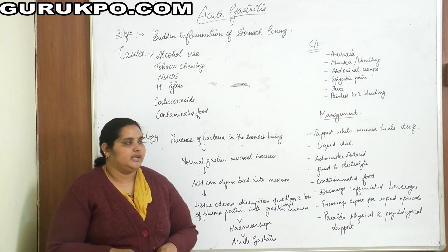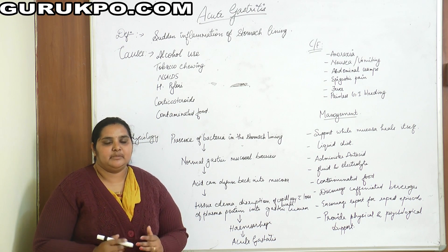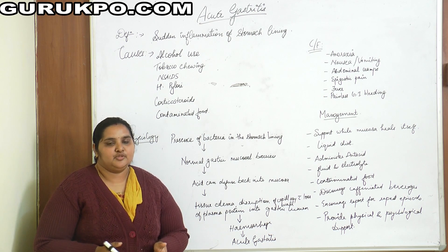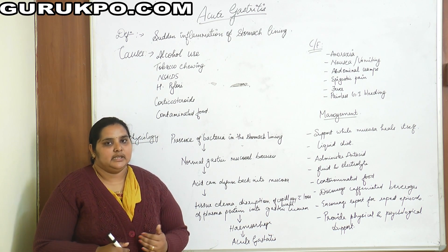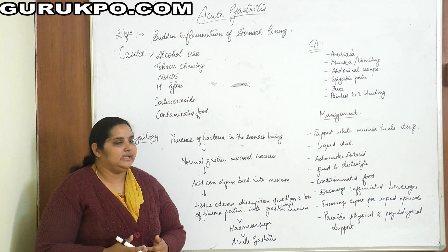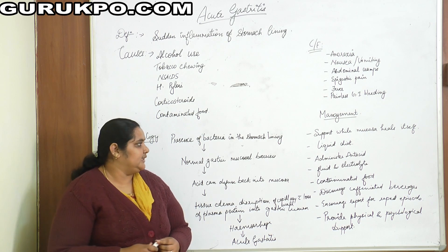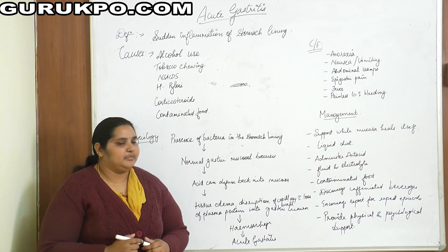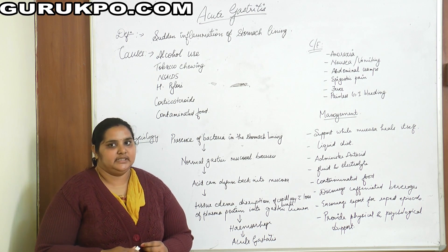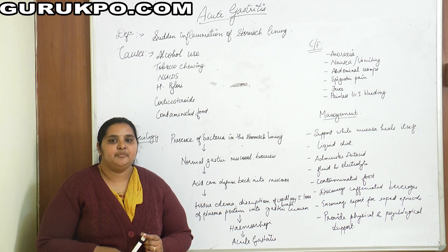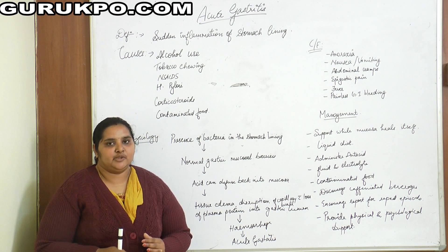Moving to management: since the mucosa is already disturbed and the lining is already irritated, we must support the patient and allow the mucosa to heal itself before administering medications. The patient should be advised to take a liquid diet, as it is easily digestible. Antacids such as ranitidine are given to reduce acidity. IV fluids should be given to maintain fluid and electrolyte balance, since vomiting disturbs the patient's fluid and electrolyte levels.